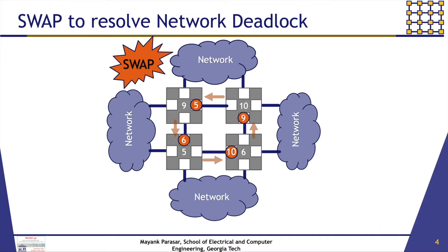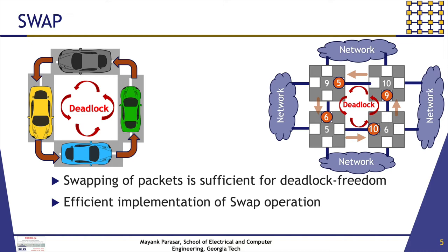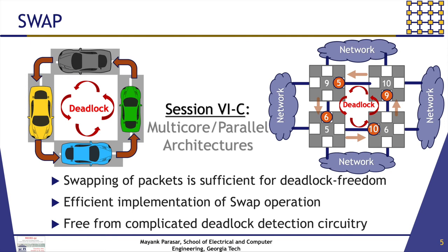In my talk, I will show that swapping of packets is sufficient to make any network deadlock free. I would propose efficient hardware implementation of swap, which is free from complicated deadlock detection circuitry. To know more, please come to my talk in session 6C, Multicore Parallel Architectures at 4:20pm. Thank you.